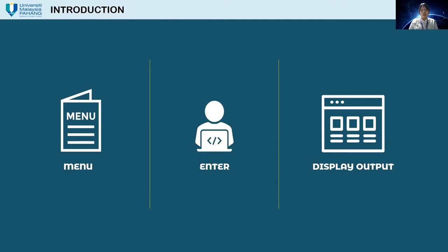After the user has entered this information, they can delete or edit their booking by choosing the relevant option in the main menu, keying in their booking ID, and the system will operate to delete or edit the data.